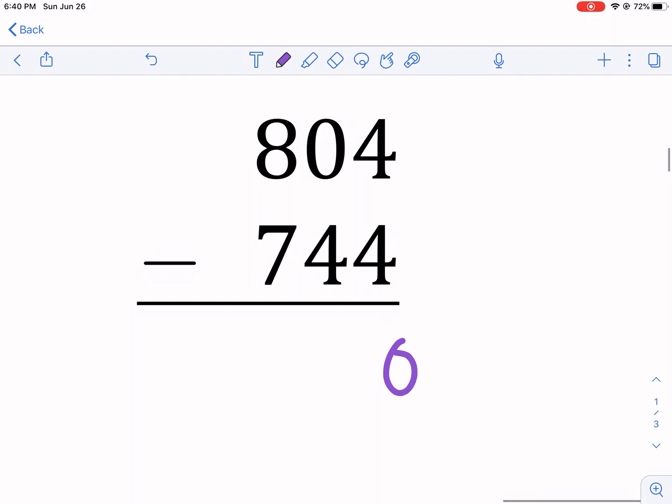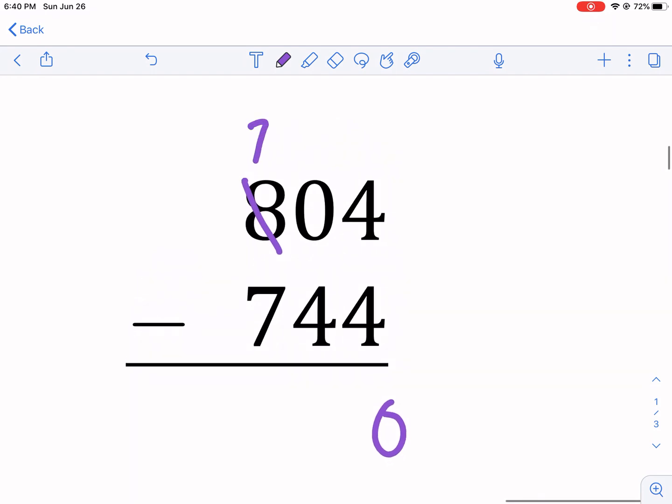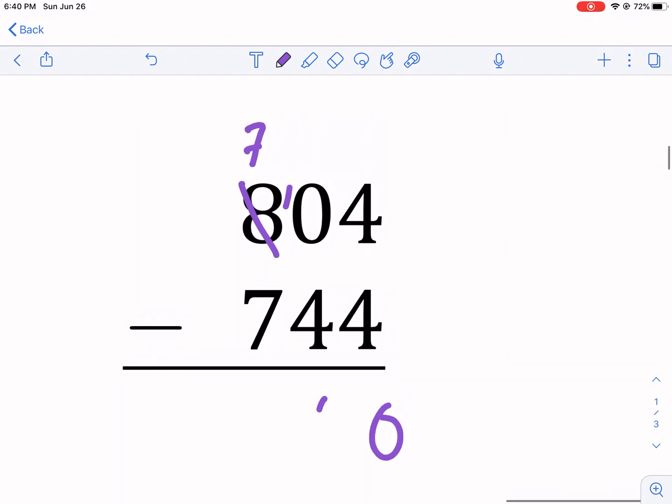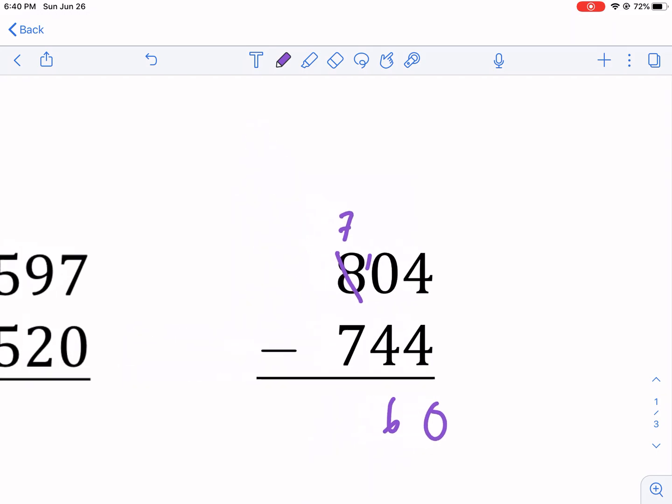4 minus 4 is 0. You can't do 0 minus 4, so we're going to pop this guy down. 7, put the 10 in front of there. Or the 1, 0 makes it 10. 10 minus 4 is 6. And we get 60 for our answer.